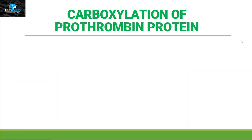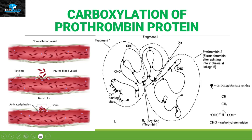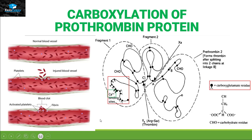Carboxylation of prothrombin protein: prothrombin is present in our blood vessels and helps in blood clotting. Looking closely at the structure, we see many carboxyglutamate residues at the end terminal of this protein. These residues help the attachment of calcium ions, which is a necessary step to initiate the process of blood clotting.